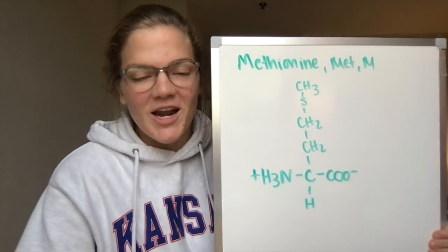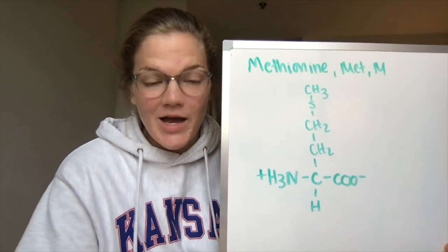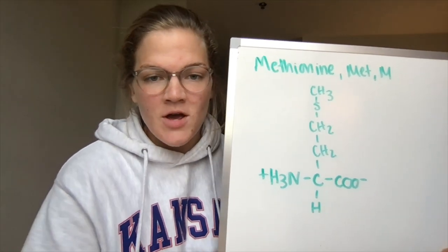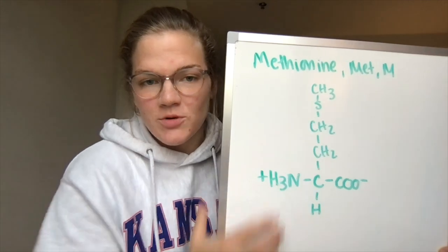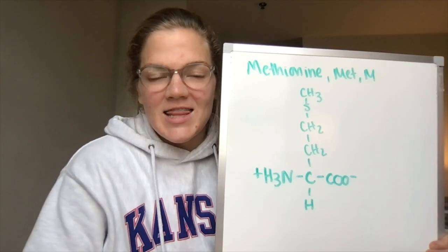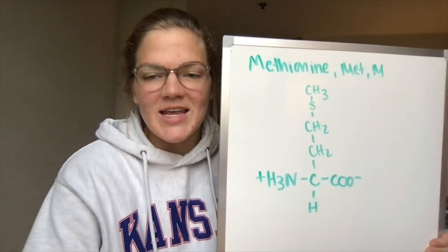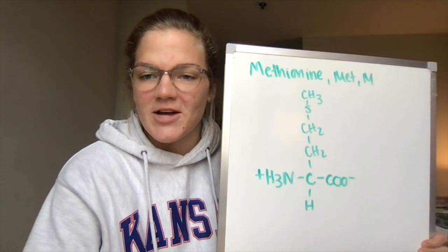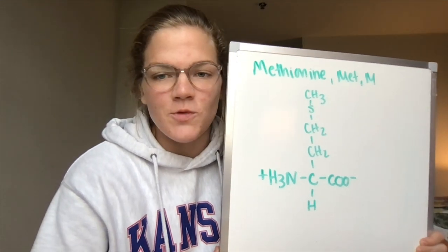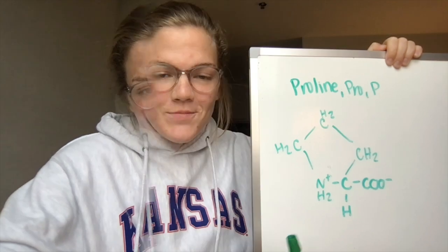For methionine, we've got a three-letter abbreviation of MET, a one-letter abbreviation of M. For our side chain here, we're mixing it up with a sulfur coming in. A fun fact is that methionine is found naturally in foods such as rice, wheat, milk, cheese, and oranges.